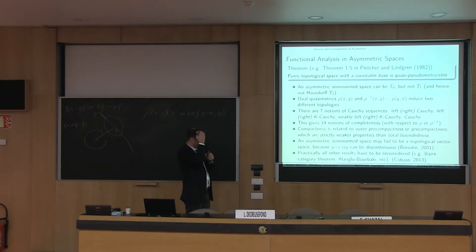Then there are seven notions of Cauchy sequences: left and right Cauchy, left right K-Cauchy (K stands for Kelley), weak left right K-Cauchy, and standard Cauchy. With these two topologies, it gives you 14 notions of completeness. That's already something quite disturbing.